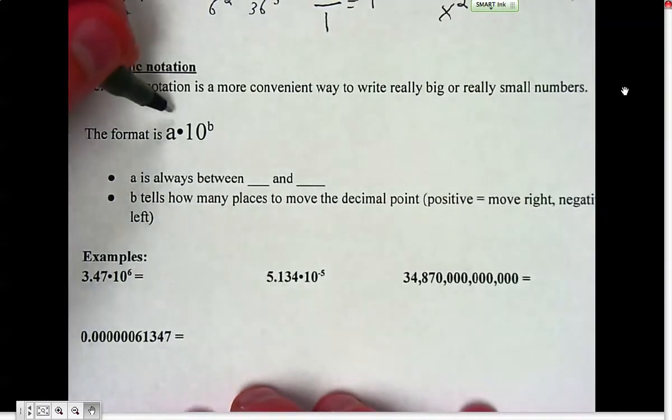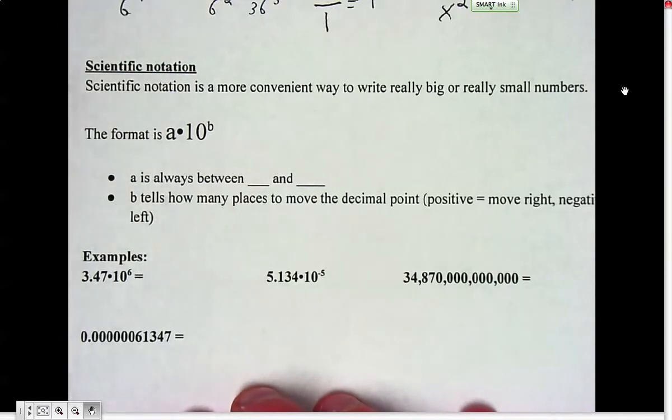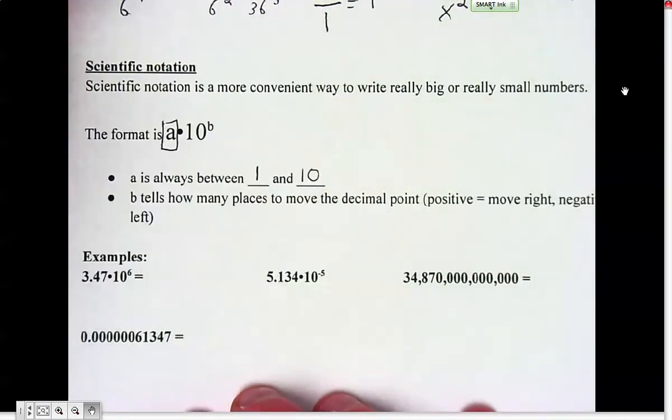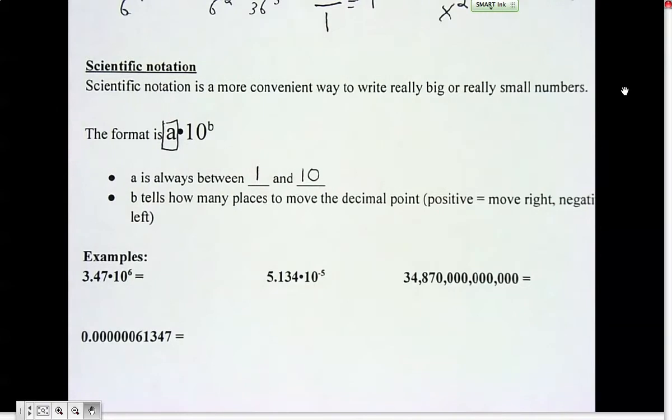The general format is a number times 10 to a power. That number out in front is always between 1 and 10, so it's basically a one-digit number, probably with some decimals.